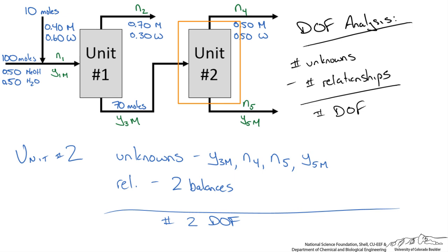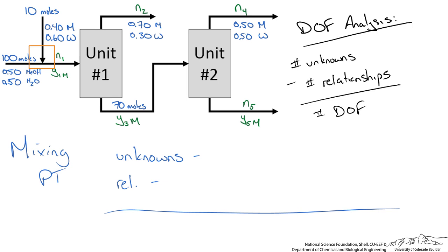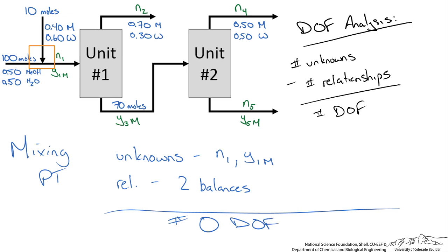The only thing left to look at is the mixing point. The two streams coming in at the entrance before unit 1 have only 2 unknowns: N1 and the mole fraction Y1M. The 2 relationships we can write are 2 material balances. With 2 unknowns and 2 relationships we have a degree of freedom of 0, so we can start here and solve for these 2 variables.